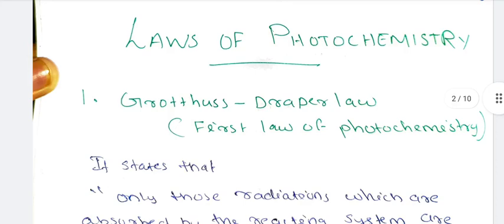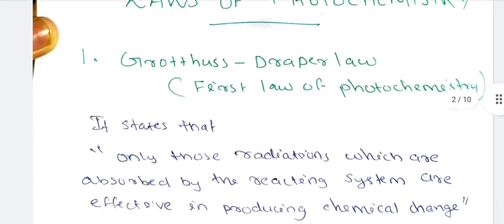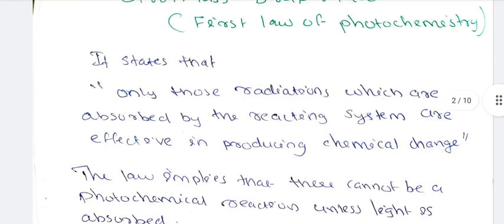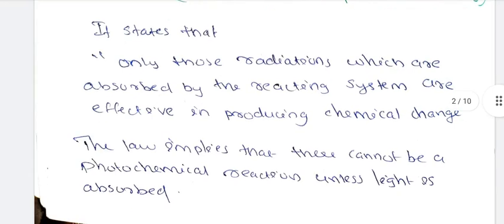Laws of photochemistry: First, the Grotthuss-Draper Law, the first law of photochemistry. Only those radiations which are absorbed by the reacting system are effective in producing chemical change. Simplified to say, a photochemical reaction requires light to be absorbed.